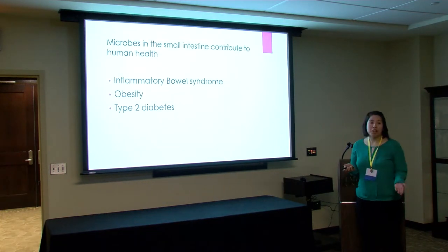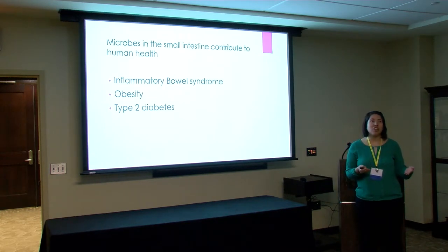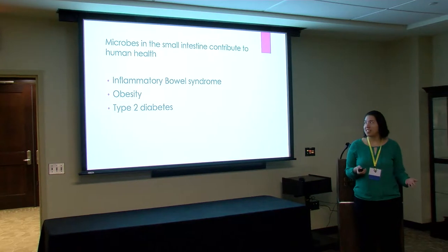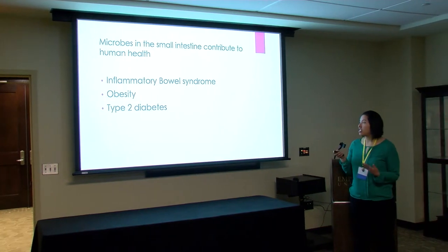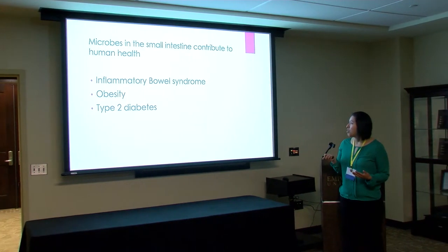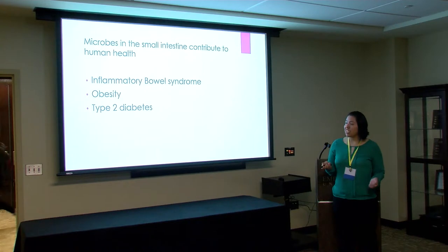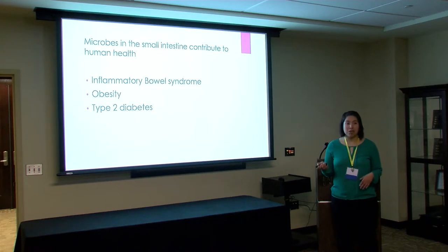There's a balance between tolerance and immune responsiveness. If this balance is lost, it's going to affect the bacterial community of the intestine, and diseases like inflammatory bowel syndrome, obesity, and type 2 diabetes can occur.